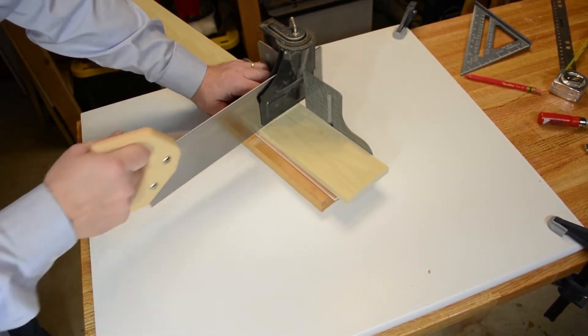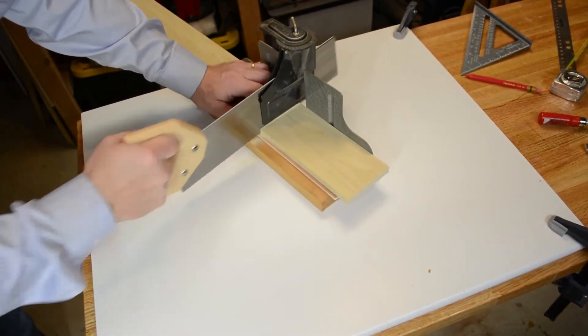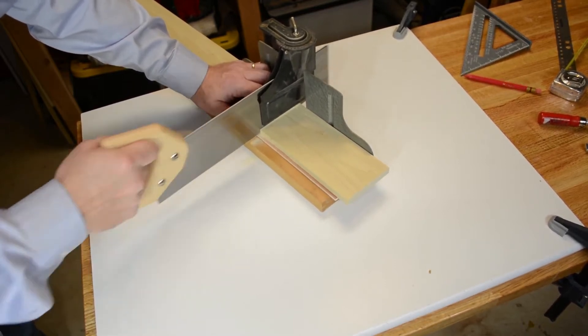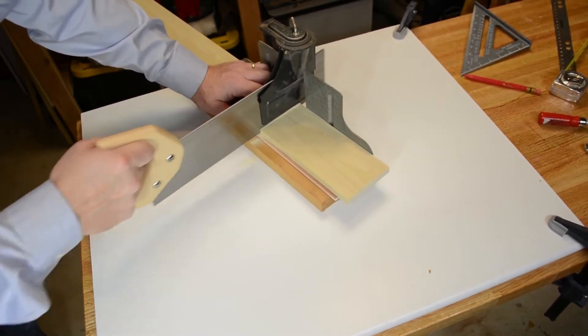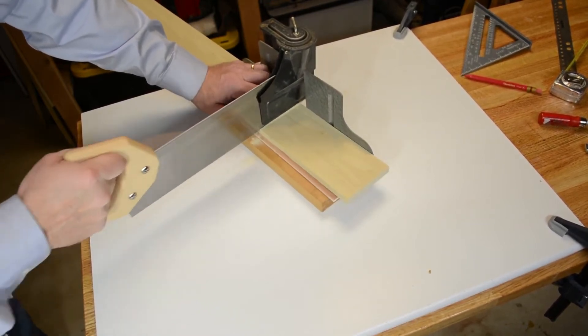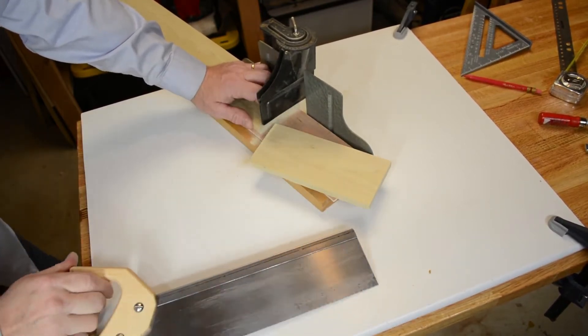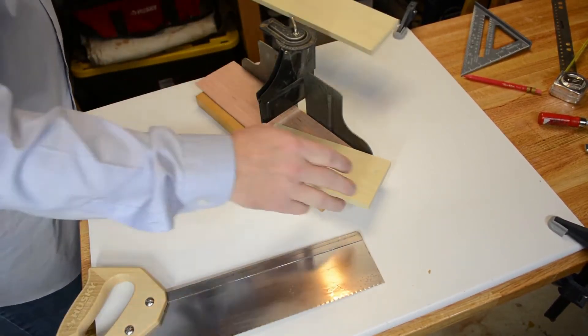But once we set up our first eight inch cut on this miter saw, it'll give us a nice straight 90 degree cut. And we're going to need four of these. So once we make our first cut, we're also going to do a little trick here to help us make sure that every piece that we cut is exactly the same length.